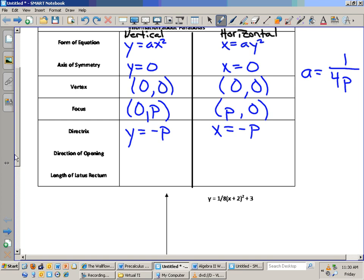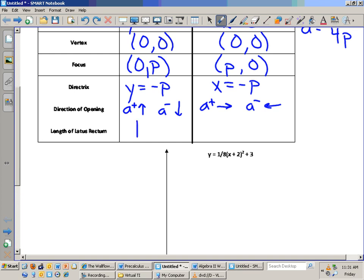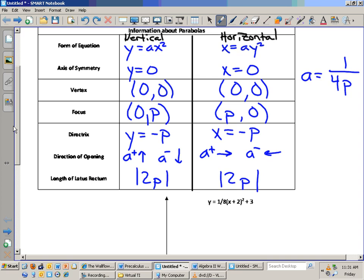And trust me, after we go through a couple examples, this will click a little bit better. But direction of opening. If it's vertical, then if A is positive, it goes up. And if A is negative, then it goes down. For horizontal, if A is positive, then it goes to the right. If A is negative, then it goes to the left. Then we have this really awkward word that comes up. It's called the latus rectum. Some students just had a lot of fun with that second hour. That was fun. Length of latus rectum is the absolute value of 2P. And I'll show you what the latus rectum is in a second. Any questions about that data?